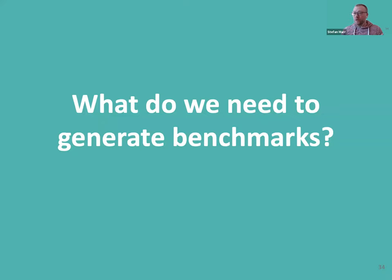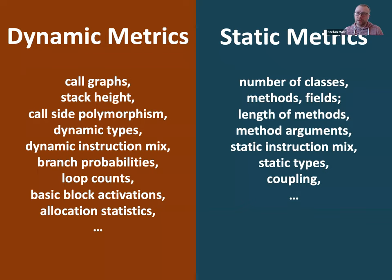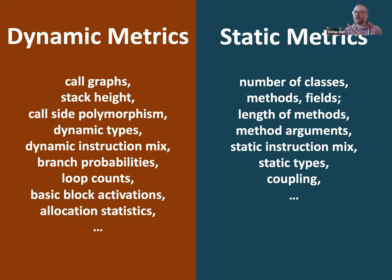How could we go about generating benchmarks? Let's look at the ingredients we need. I believe we need dynamic metrics and static metrics: things like call graphs, stack height, call-site polymorphism, dynamic types flowing through the system, dynamic instruction mix at some abstraction level such as bytecodes, branch probability, basic blocks, loop counts. And on the other hand, static metrics: number of classes, how many methods and fields a class has, static instruction mix, static types, coupling between classes — anything that describes something important relevant for optimizing or representing real application behavior in generated code.